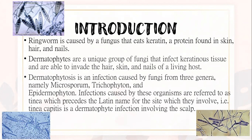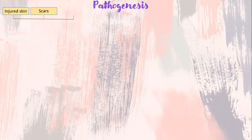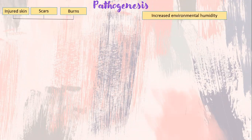For example, tinea capitis is a dermatophyte infection involving the skull. For the pathogenesis, injured skin, scars, and burns are factors that predispose the host's skin to infection. Increased environmental humidity is a factor favoring fungal invasion.